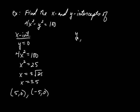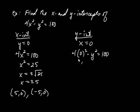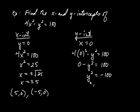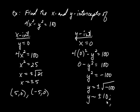Now looking for y-intercepts, we set x equal to zero. So we have 4 times zero squared minus y squared equals 100, which simplifies to negative y squared equals 100, or y squared equals negative 100. This equation has no real solutions because there's no real number you can square to get negative 100. You'd write y equals plus or minus the square root of negative 100, which is plus or minus 10i — imaginary numbers. So there are no real y-intercepts. We have two x-intercepts but no y-intercepts.